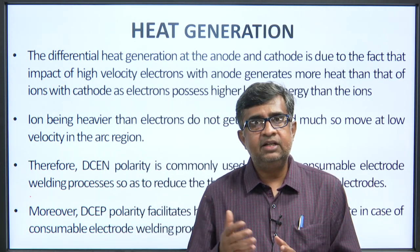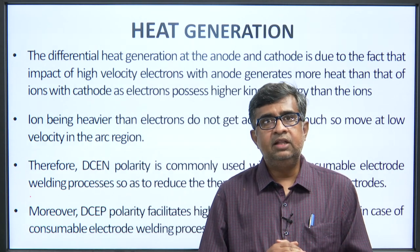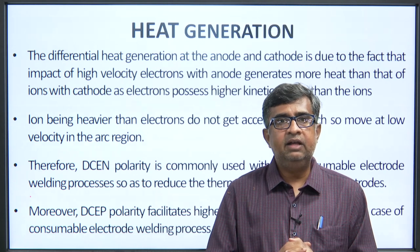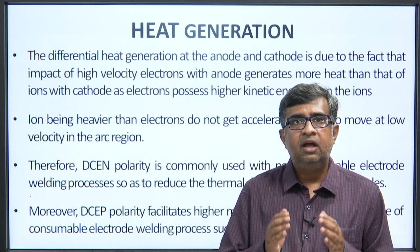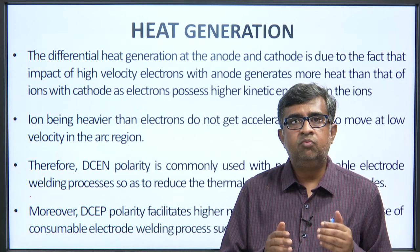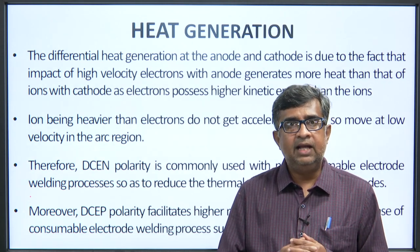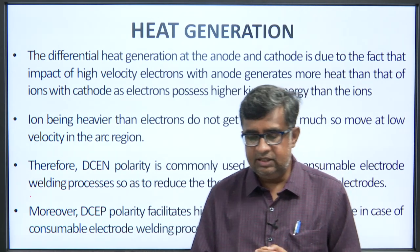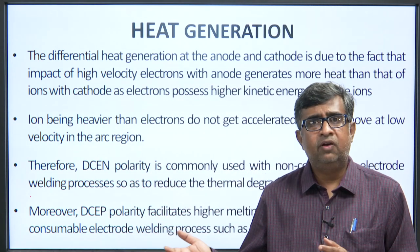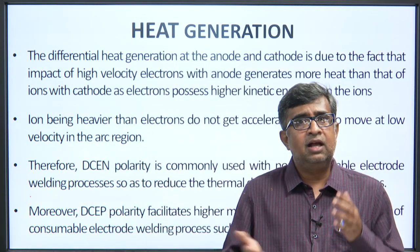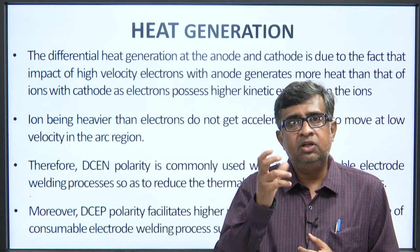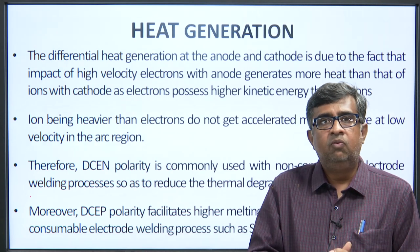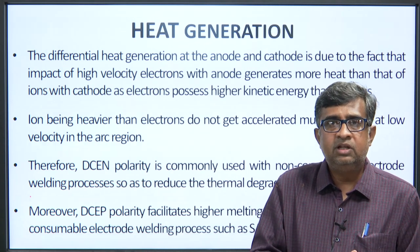The different heat generation at the anode and cathode is due to the fact that the impact of high-velocity electrons with the anode generates more heat than that of ions with the cathode, as electrons possess higher kinetic energy than ions. That is why heat is generated mostly at the anode.